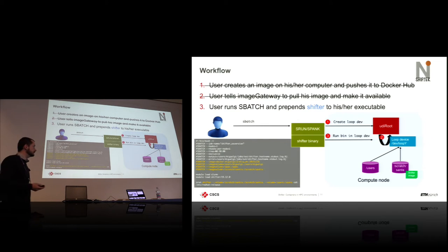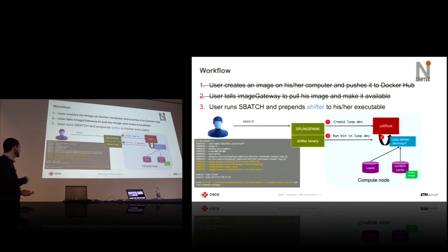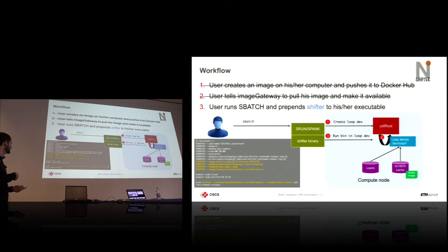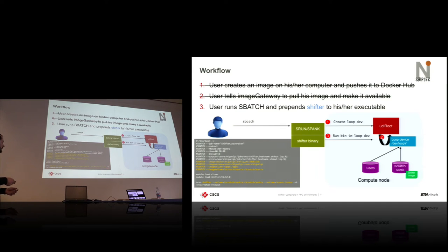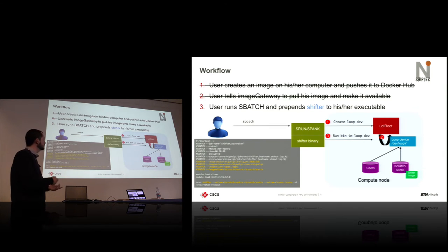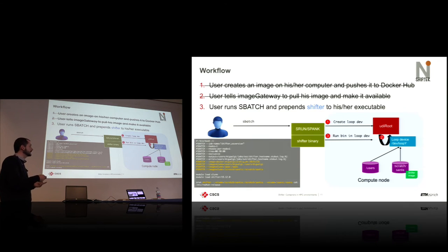Once the image is available, the workflow is like any other Slurm job. You just run your sbatch command with a few additions thanks to the Slurm plugin. You choose the image you want to use and the volumes you want to expose — the admin can set defaults to expose only the user's home or scratch. Then you run your binary with the word 'shifter' before it, and the Slurm plugin automatically creates the loop device. Everything is done for you.